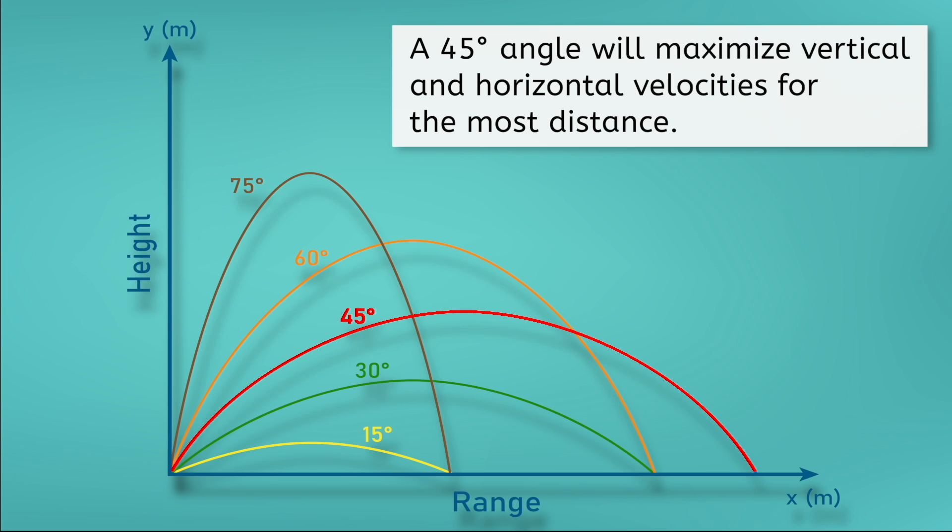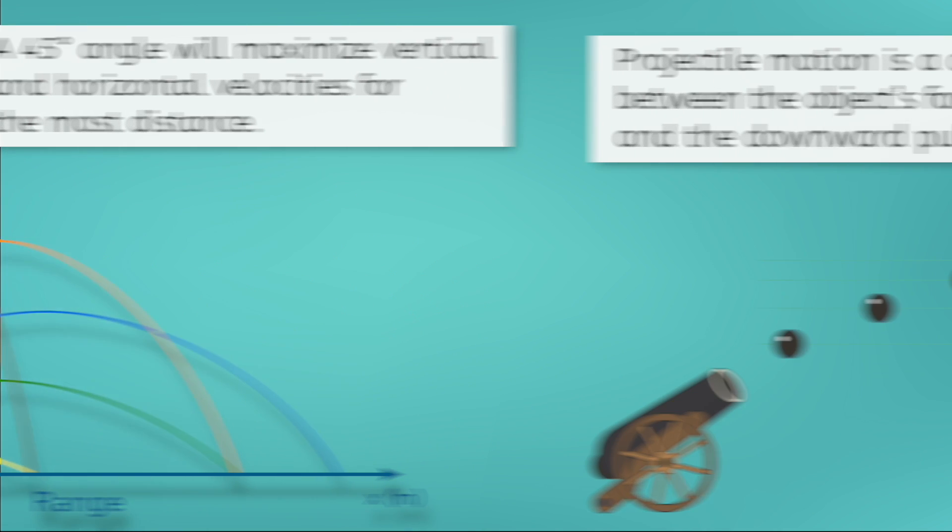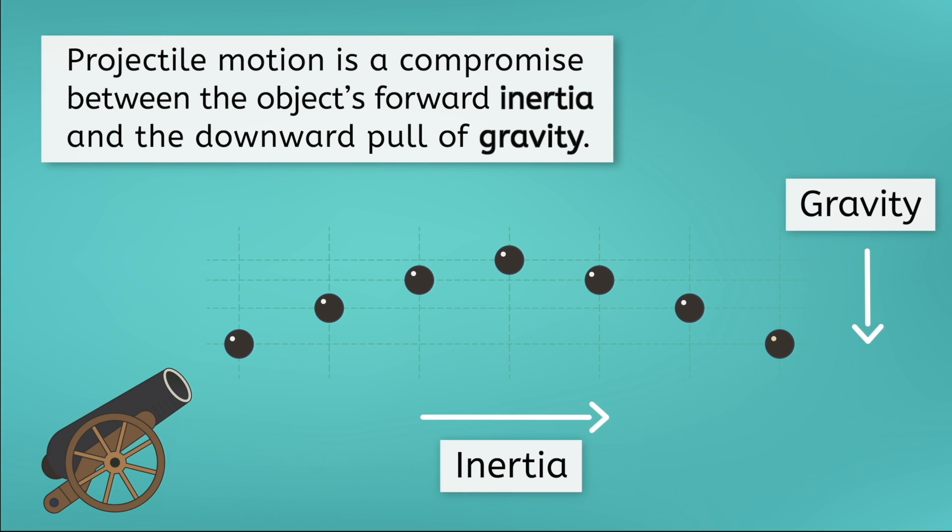This will always be true for a projectile. A 45 degree angle maximizes both the vertical and horizontal components of velocity. So, if distance is what you're looking for, this is the angle to choose. Remember that projectile motion is always a compromise between the object's forward inertia and the downward pull of gravity. We found the same compromise when studying how planets orbit stars.